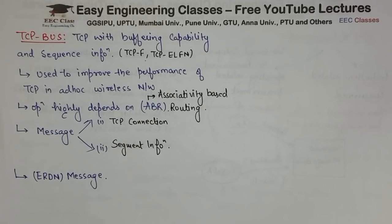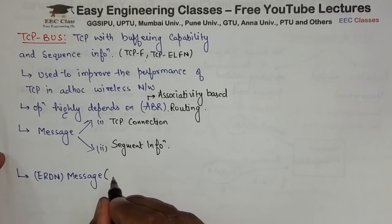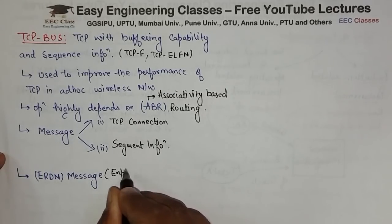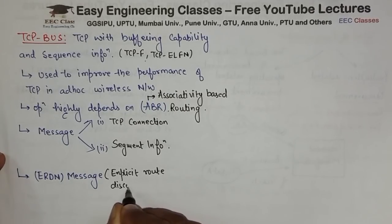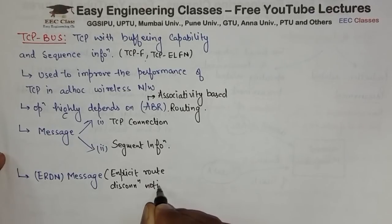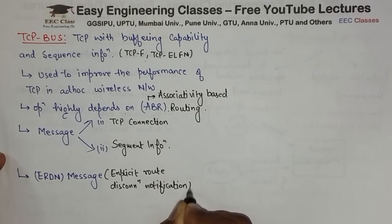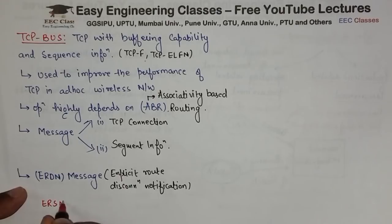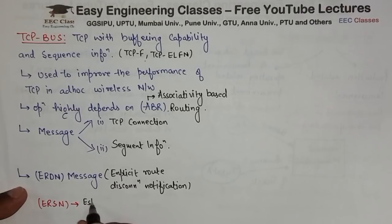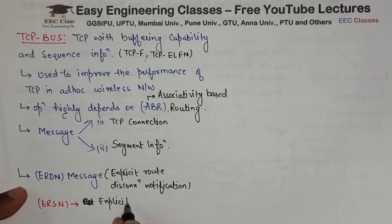Then to send the message about the path break, ERDN message is used which is Explicit Route Disconnection Notification. Agar path break hua toh ERDN message jayega. Or agar path reestablish hua toh ERSN message use hoga. ERSN ka matlab hota hai Explicit Route Successful Notification.